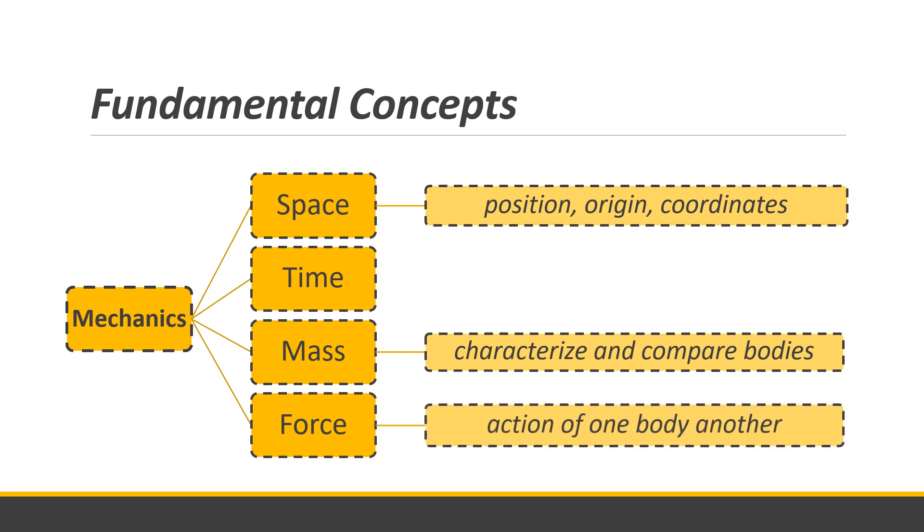For the force, a force represents the action of one body to another. It can be exerted by actual contact or at a distance, as in the case of gravitational forces and magnetic forces. A force is characterized by its point of application, its magnitude and direction. For example, you touching a particle, at what point you are touching the particle, how strong or what is the magnitude of force you are exerting on that particle and in what direction. A force is represented by a vector.